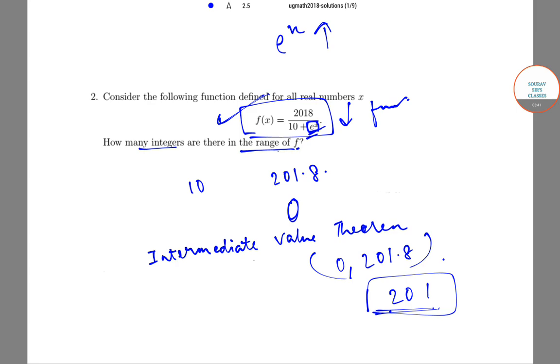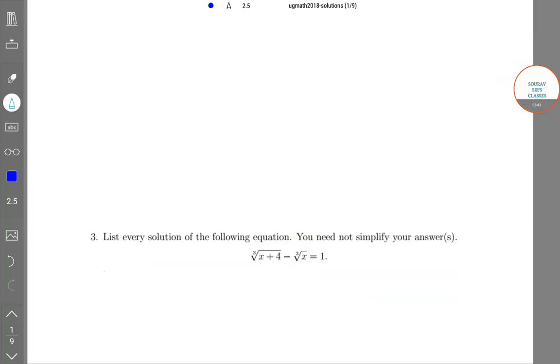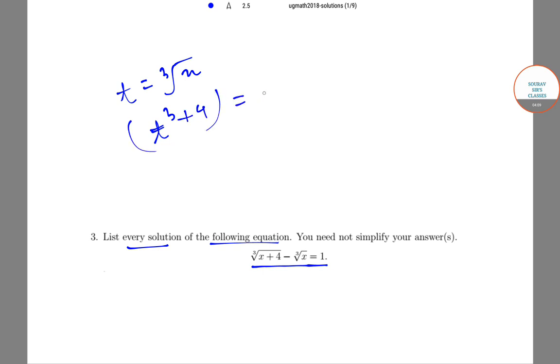The next question is: list every solution of the following equation. You need not simplify your answer: -∛(x+4) - ∛x = 1. Take t = ∛x, so we get ∛(t³+4) = 1 + t. Cubing both sides and simplifying, we'll get the quadratic equation t² + t - 1 = 0.